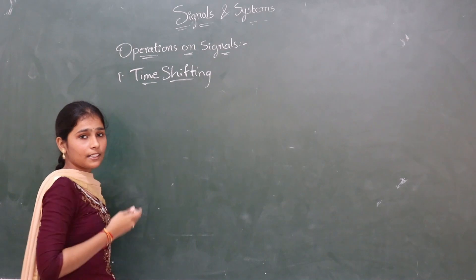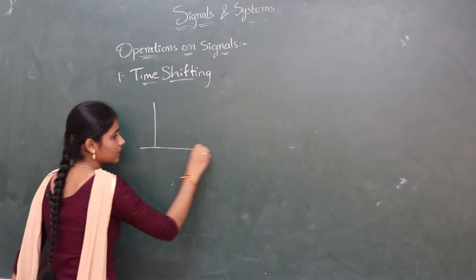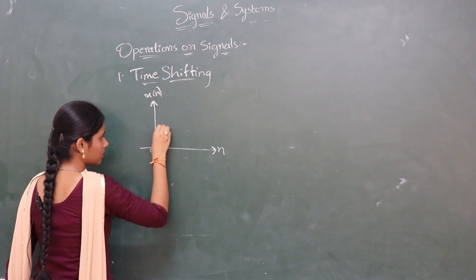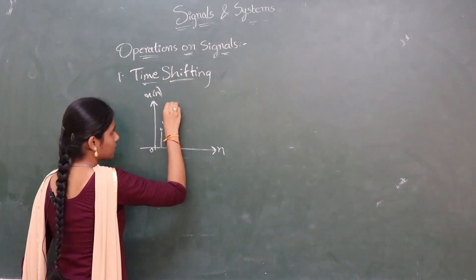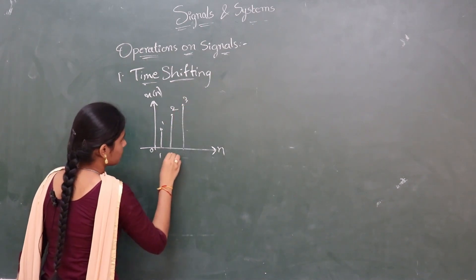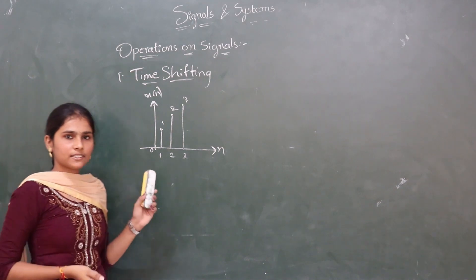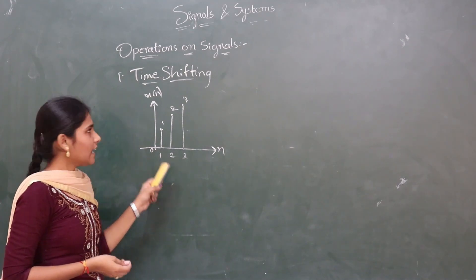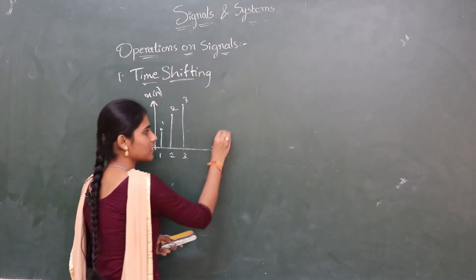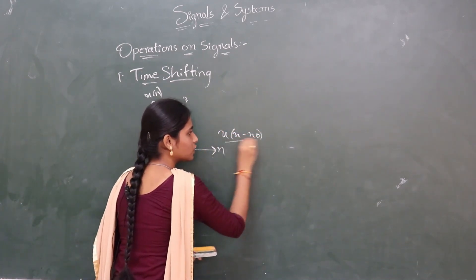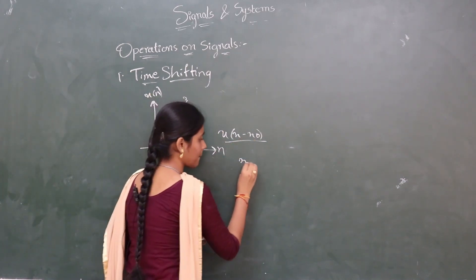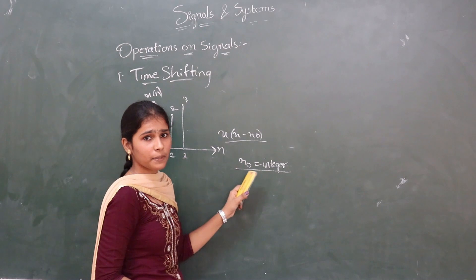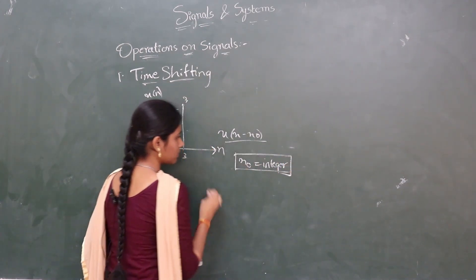Now, time shifting operation on discrete time signals. Let us consider a discrete time signal x of n. The time shifting operation is the same as for continuous time signals. Here, x of n minus n0 is the shifted version of x of n. Note that n0 must be an integer — it should not be a fractional part; it must definitely be an integer.